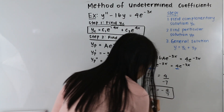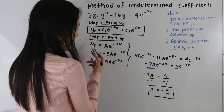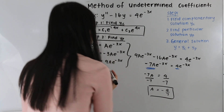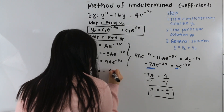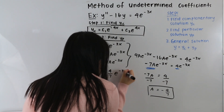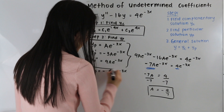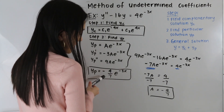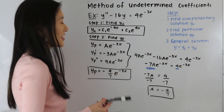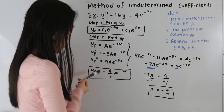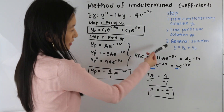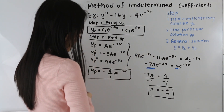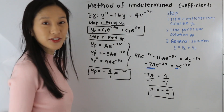Now that we know a is equal to negative 4/7, we go back to our yp and plug it in. Our particular solution is yp is equal to negative 4/7 e to the negative 3x. Now that we have both our complementary and particular solutions, in step 3 all we need to do is add these two together to get our general solution.